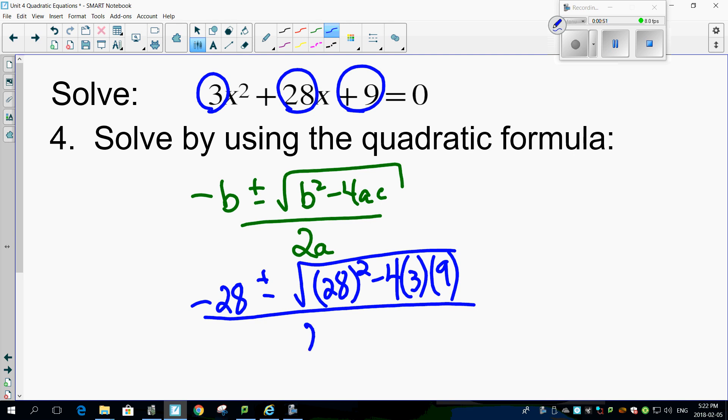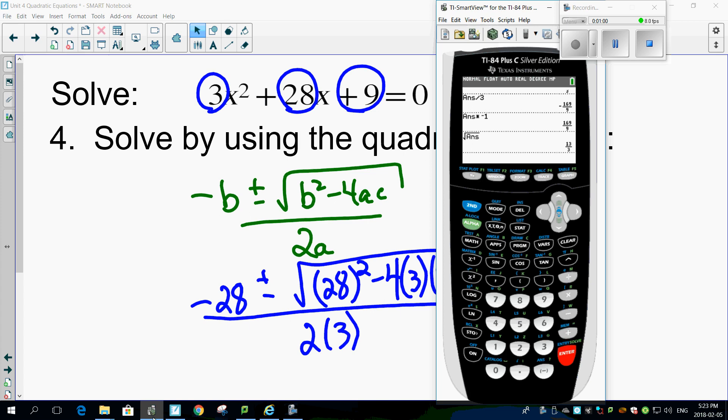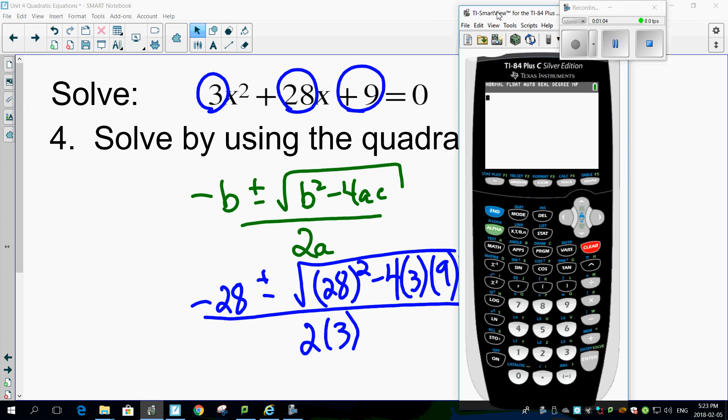2 times a is 2 times 3. All right, so do what's inside this bracket first. Let's bring up our calculator. Let's clear all the stuff out of the calculator here.